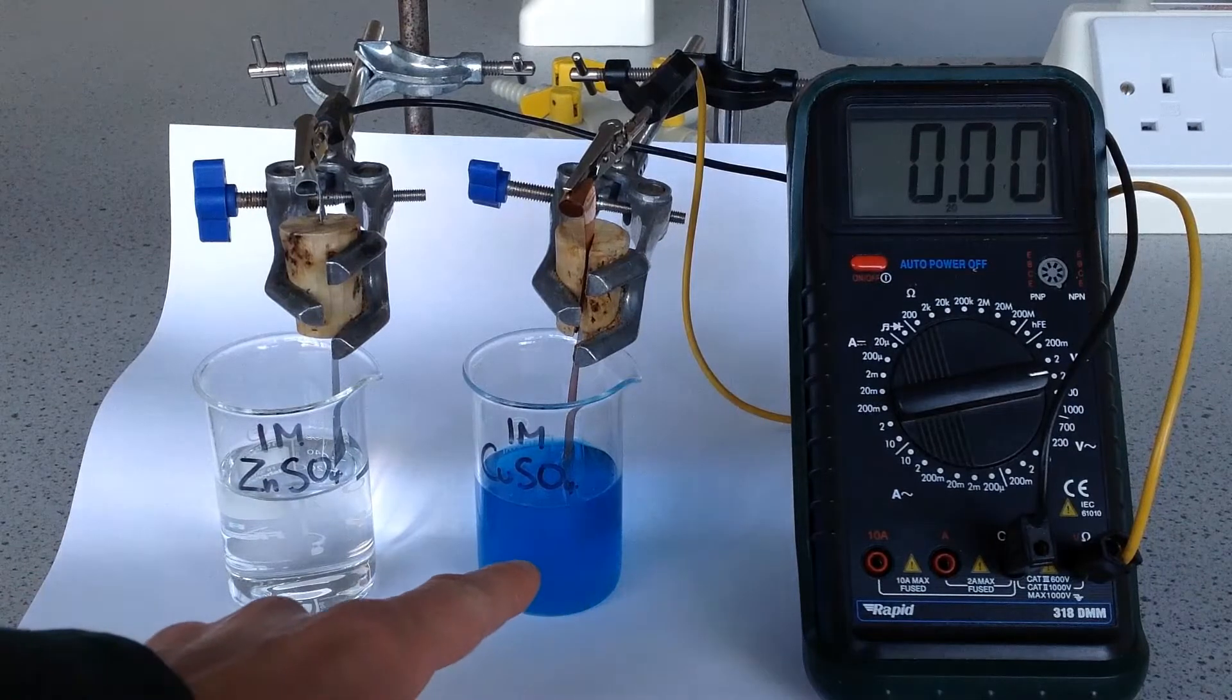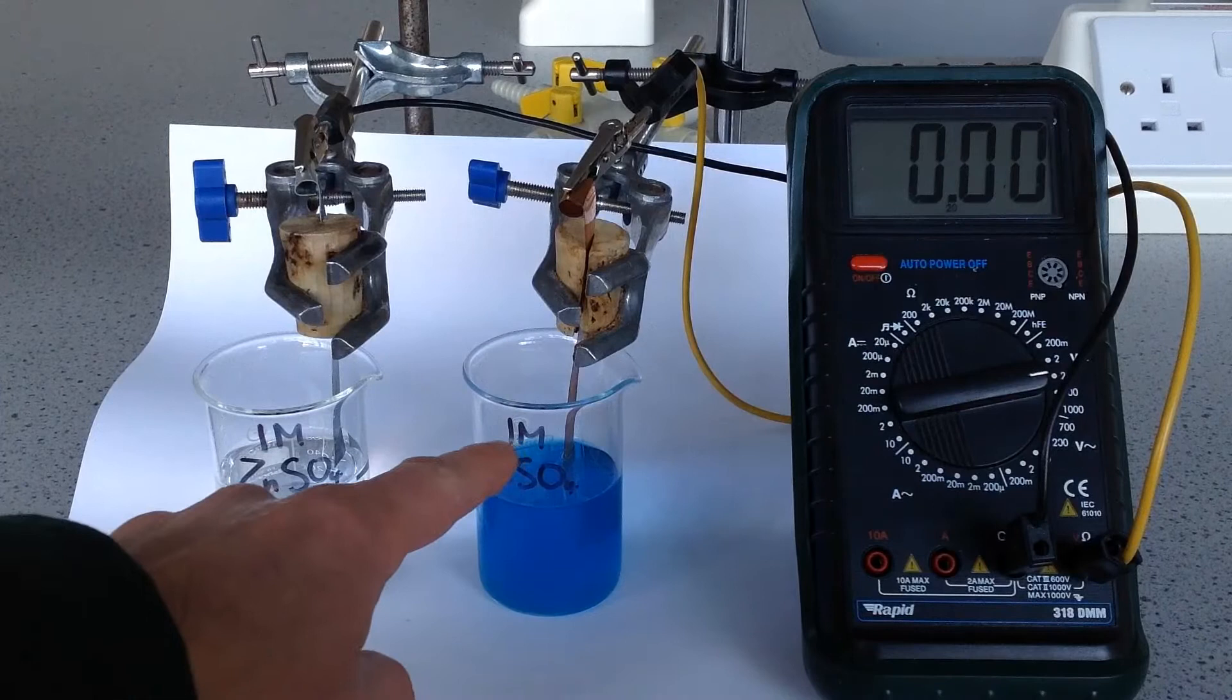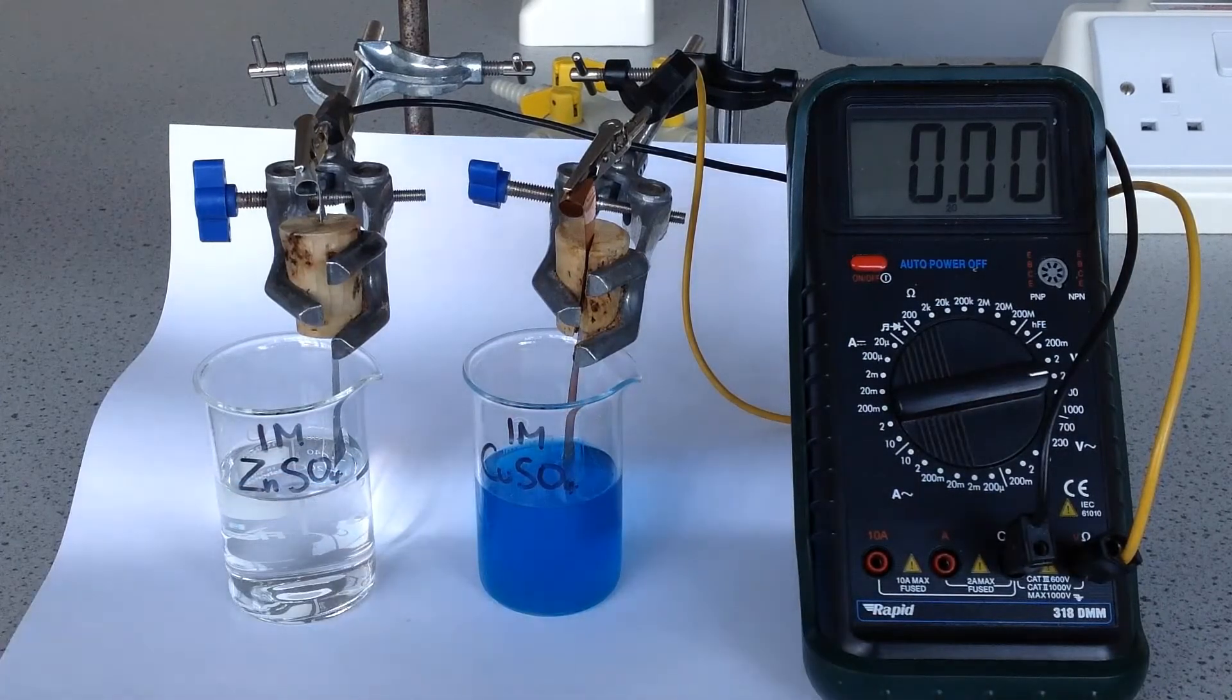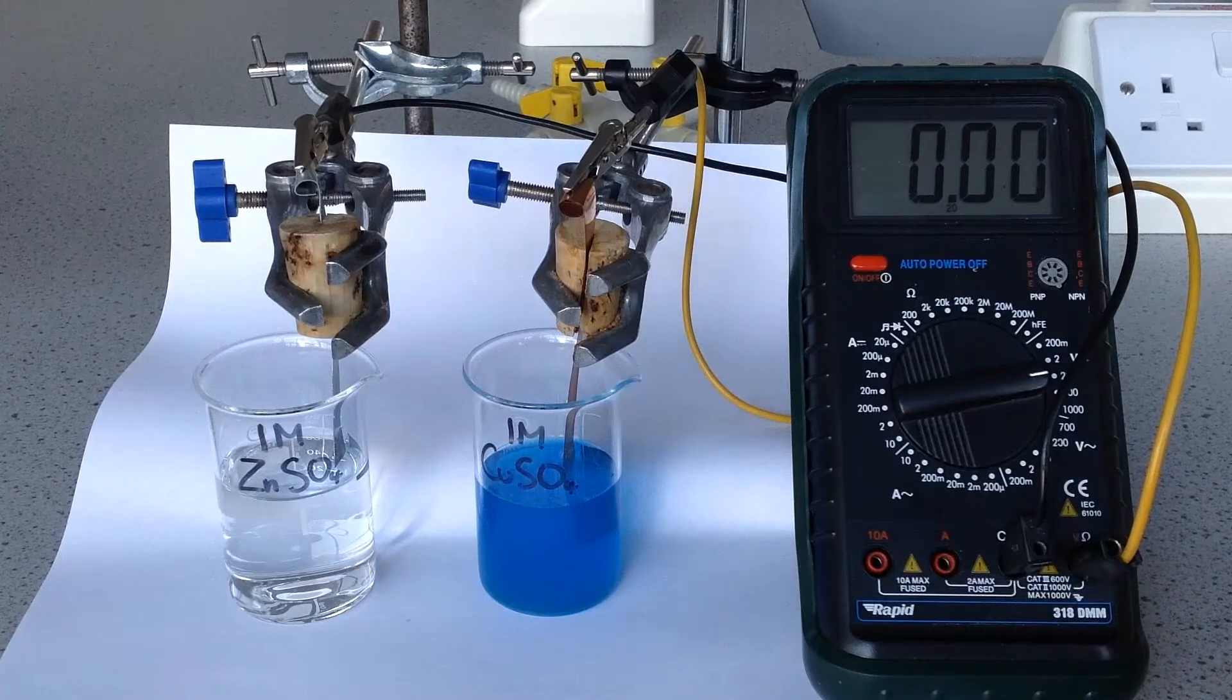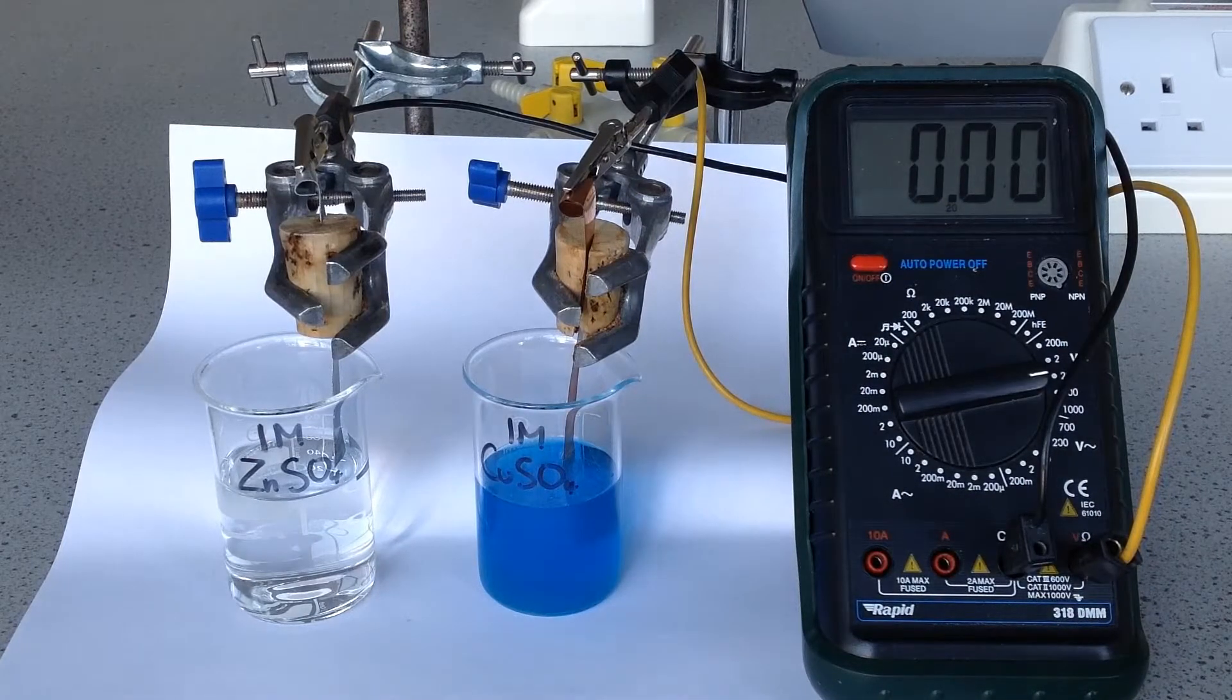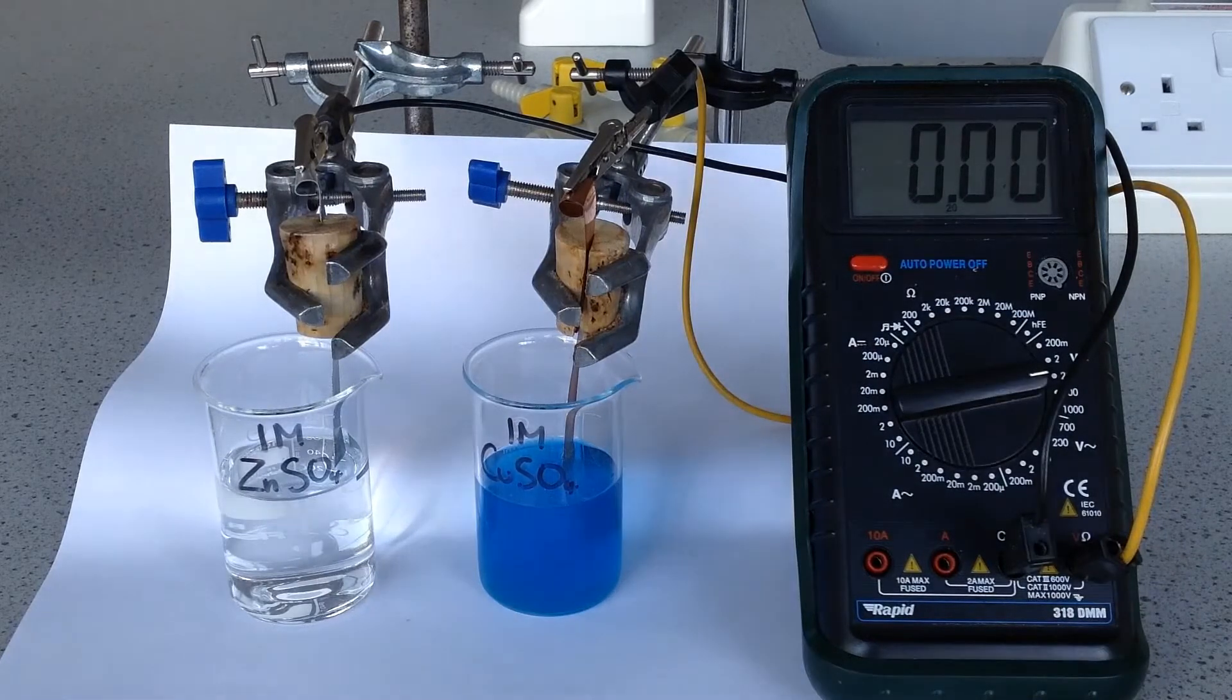And on the right hand side we've got the copper sulphate solution, one mole per decimetre cubed concentration and a piece of copper inside. And when we connect these up we're always going to need a salt bridge, so we've connected them up with wires to the voltmetre, currently reading zero.